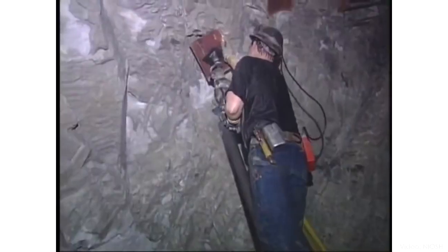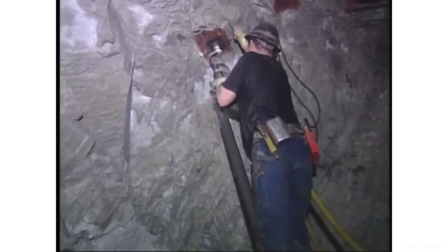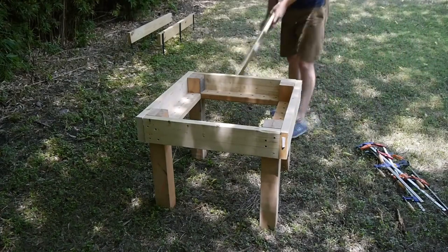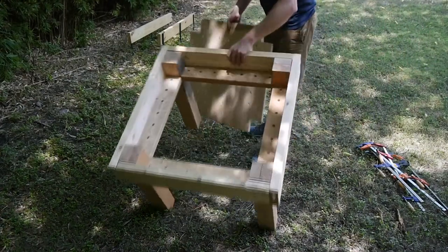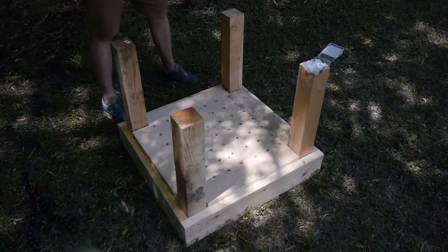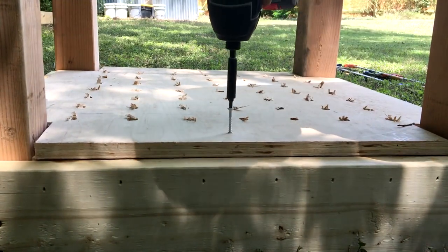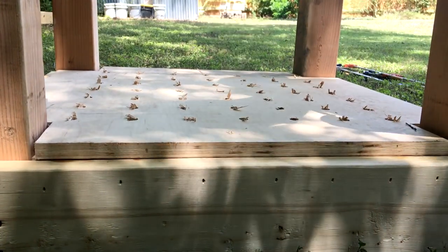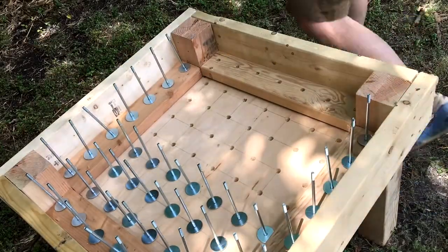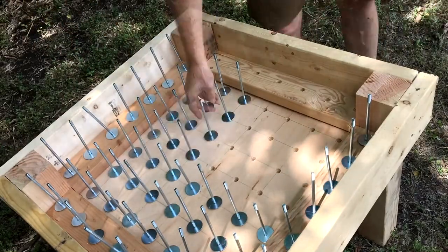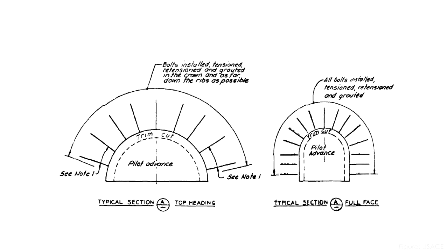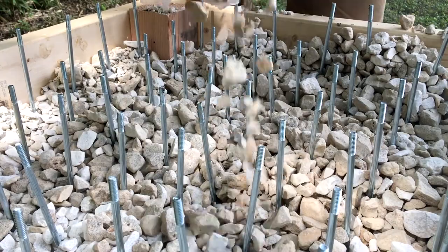Rock bolts are a type of reinforcement for stabilizing rock excavations, usually made from steel bars or bolts. I built this demonstration to show how they work. This is essentially the frame of a table, but the top is completely open. I attached a bottom to the frame to represent temporary shoring of a tunnel roof — even though our permanent support system doesn't rely on this, it's necessary until we get the rock bolts installed. My rock bolts are just actual bolts with large fender washers to spread out the load, spaced out in a nice grid pattern. Actual rock bolts are similarly installed in a pattern along a tunnel.